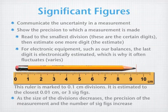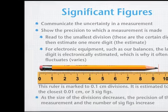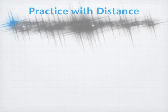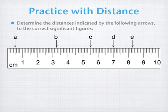As you can see, as the size of the divisions decreases — going from 10 to 1 to 0.1 centimeters — the precision of the measurement and the number of significant figures, or sig figs, increases. Let's practice making readings using this ruler marked off in centimeters. Estimate the distance of each of the arrows A through E along the ruler to the correct number of significant figures.